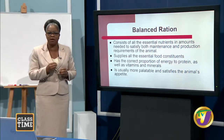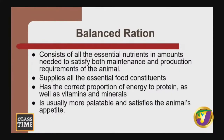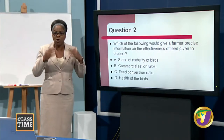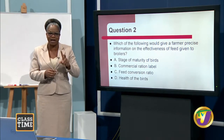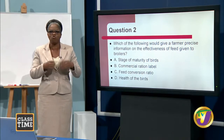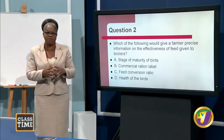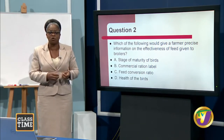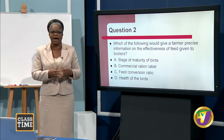The balanced ration must consist of all the essential nutrients in amounts needed to satisfy both maintenance and production requirements of the animal. It must supply all essential food constituents, have the correct proportion of energy to protein as well as vitamins and minerals, and it is usually more palatable and satisfies the animal's appetite. When animals have a balanced diet, they will be able to reach slaughter weight in the shortest possible time.